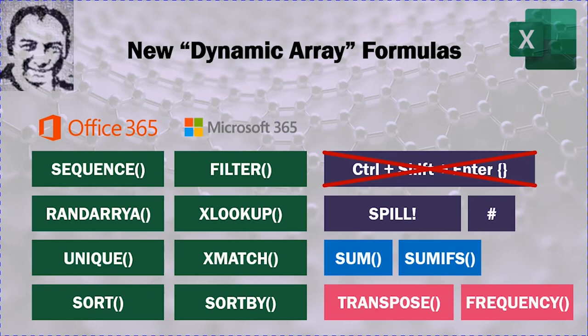The new calculation engine allows Excel to determine naturally and automatically if the formula will result in a single or multiple values. If the formula will result in more than one value, the formula will spill automatically and provide you with lists or arrays of values. This is completely different from the old days when you had to hit CTRL SHIFT ENTER to run your array formula. Now in all cases, you just hit a single key which is ENTER.